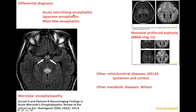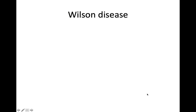Besides these encephalitis types, Wernicke encephalopathy is also in the differential diagnosis of Leigh syndrome, but in Wernicke there is involvement of the mammillary bodies, which is not the case in Leigh. Without a clinical history, neonatal asphyxia may be considered on MRI alone, but patients have a totally different clinical story. Other mitochondrial diseases such as MELAS can resemble Leigh, and metabolic diseases involving copper disturbances — such as Wilson disease — also involve the basal ganglia, which will be discussed next time.